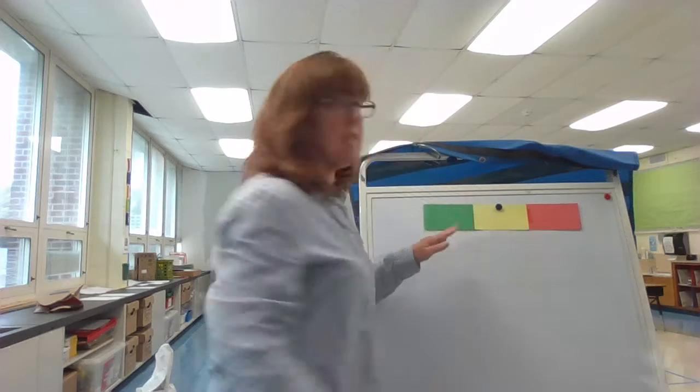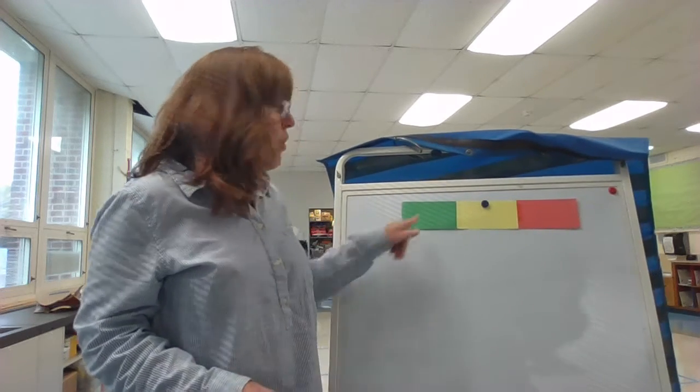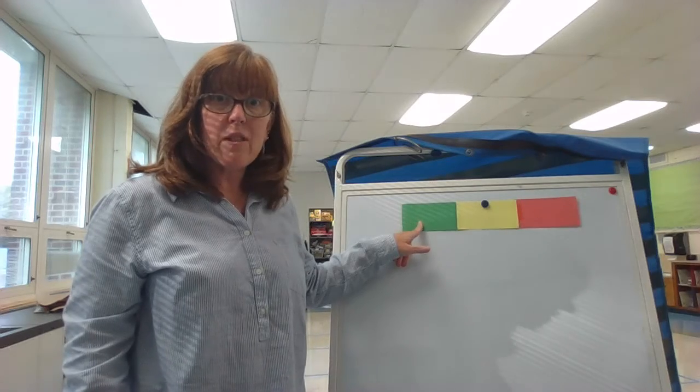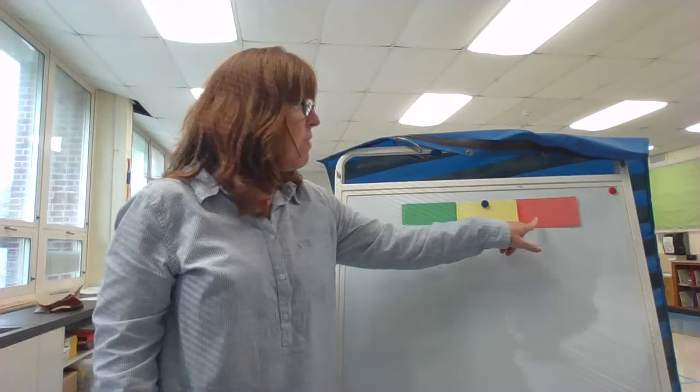Just like this, this helps me when I think about reading words and listening for the sounds. Green is for the beginning sound, yellow is for the middle sound, and red is for the ending sound.